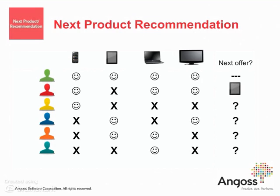The model works by building an individual acquisition model for each product. The scores can be normalized using ranks, and those rankings are applied to each customer. The product that ranks highest with the customer would be the next product to recommend to them. Building several individualized models works when the number of products is small, say under 10 products. However, when the number of products becomes large, other techniques such as market basket analysis are more appropriate.